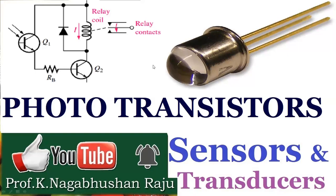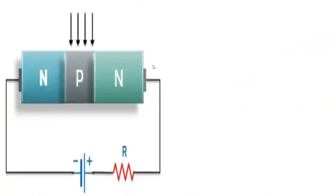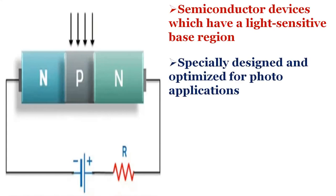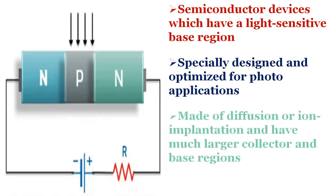Phototransistors are either tri-terminal (emitter, base, and collector) or bi-terminal (emitter and collector) semiconductor devices which have a light-sensitive base region. Although all transistors exhibit light-sensitive nature, these are specially designed and optimized for photo applications. These are made of diffusion or ion implantation and have much larger collector and base regions in comparison with ordinary transistors.